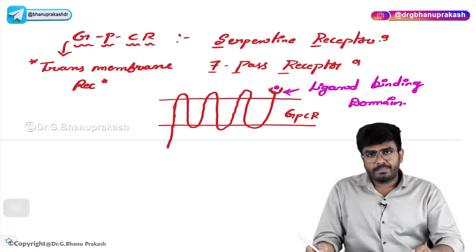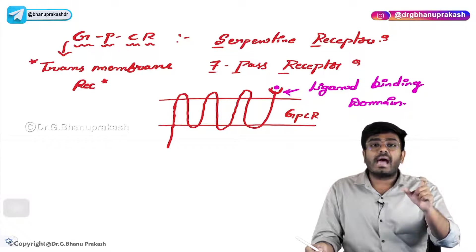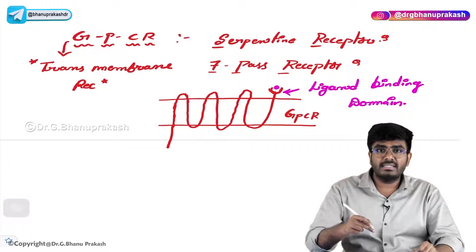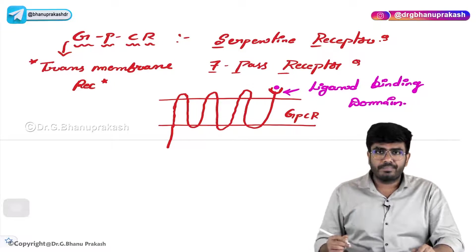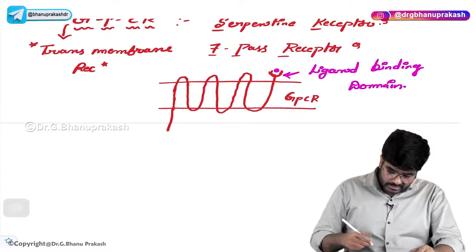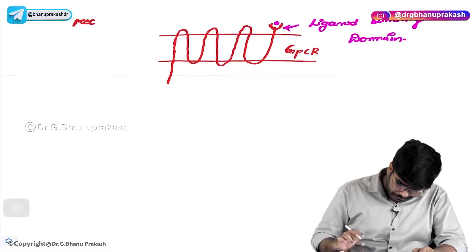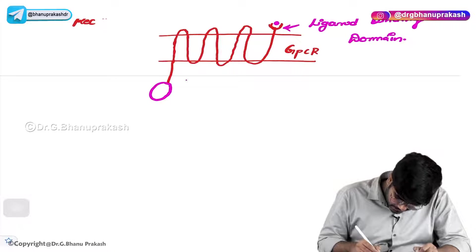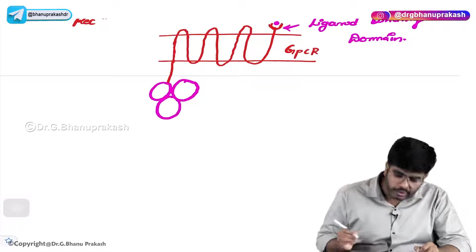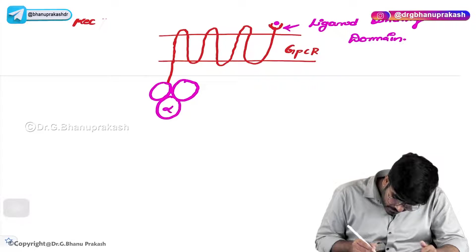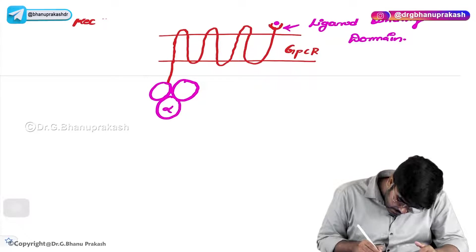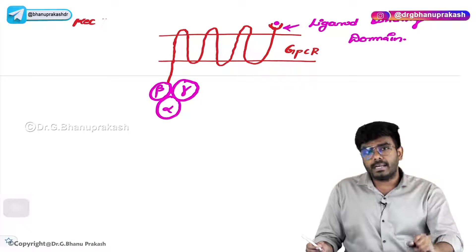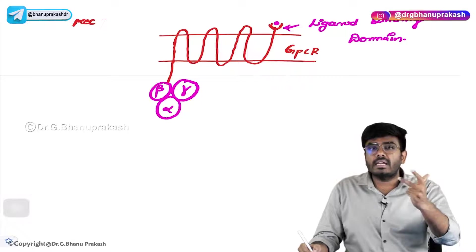For example, hormones derived from proteins cannot cross the cell membrane, so they have to act on a receptor present on the cell membrane. These protein hormones will come and bind to the ligand binding domain and stimulate this receptor. Now there is one more domain present inside the cell. To this G protein coupled receptor, three subunits are attached: the alpha subunit, beta subunit, and gamma subunit.